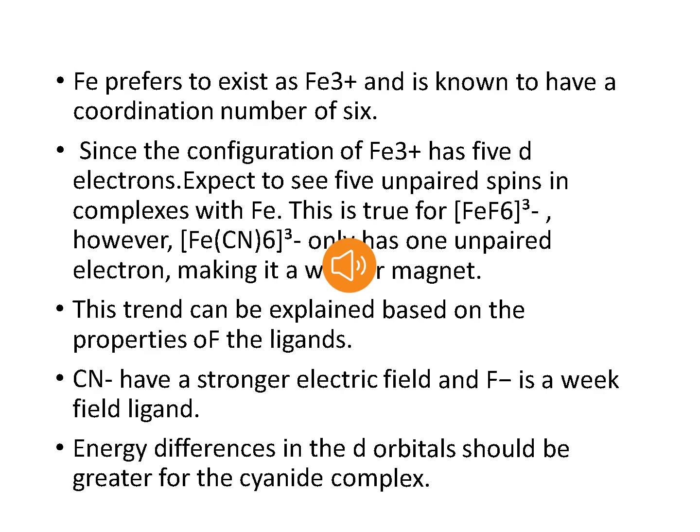Higher is the number of unpaired electrons, higher is the magnetic moment. Cyanide is a strong field ligand — it forms low spin or spin-paired complexes. Iron(III) in hexacyanoferrate with a 3d⁵ configuration has one unpaired electron. Fluoride is a weaker ligand — it forms high spin or spin-free complexes. In hexafluoroferrate, iron has five unpaired electrons, so it has a greater ability to form a magnet.